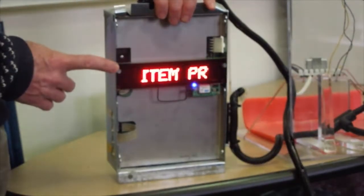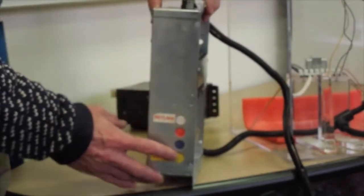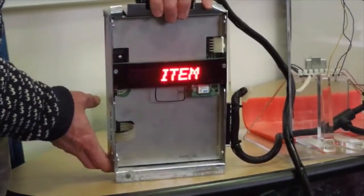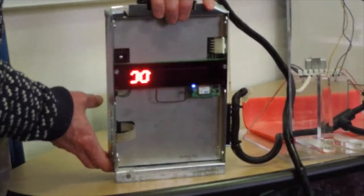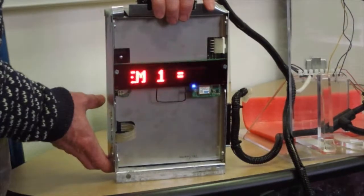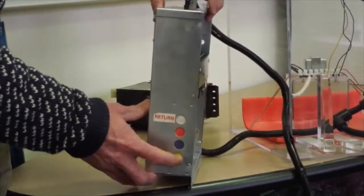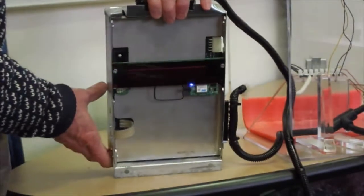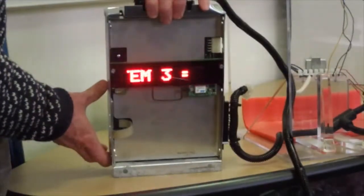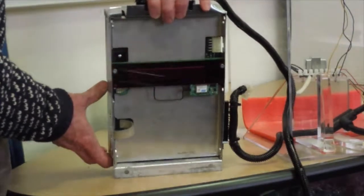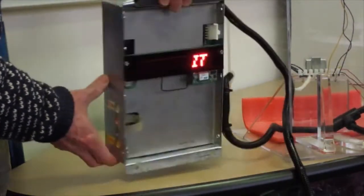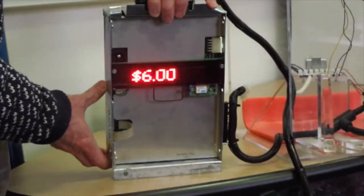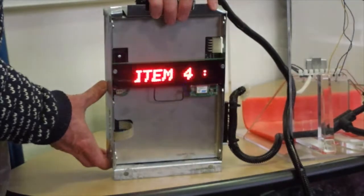We simply need four unique prices. Press the yellow button. Item number one, we've programmed to $9. Press the yellow button again, item number two is $8. Item number three, we've made $7, and item number four is $6. So we have four unique prices.